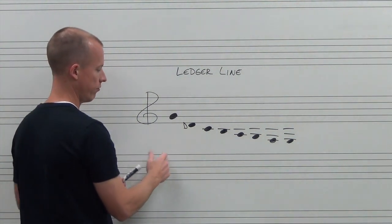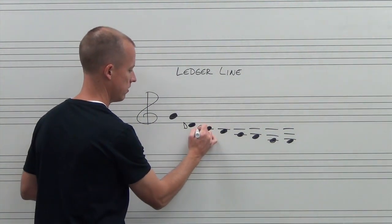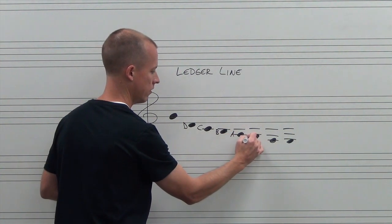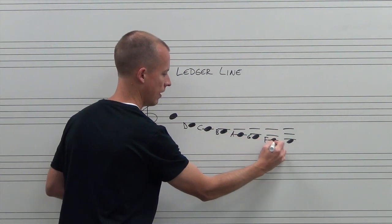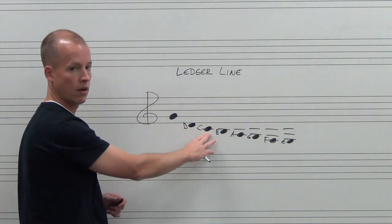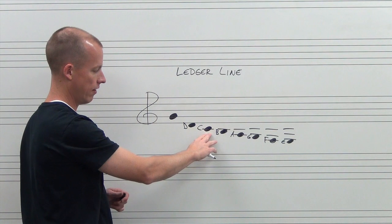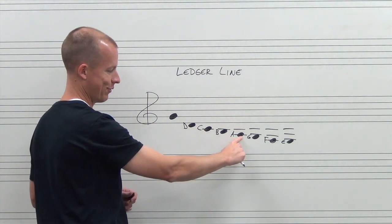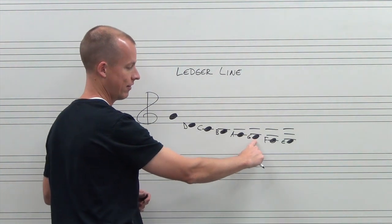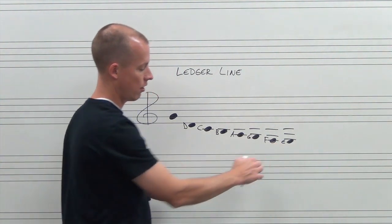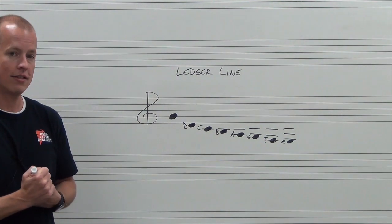So to do this, we're going to go backward in the musical alphabet. D, C, B, A, G, F, and E. So we have below the first line, first ledger line below the staff, below the first ledger line, second ledger line below the staff, below the second ledger line, third ledger line below the staff, and below the third ledger line is E.